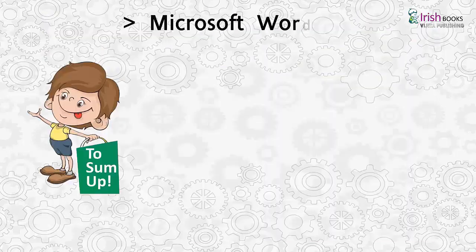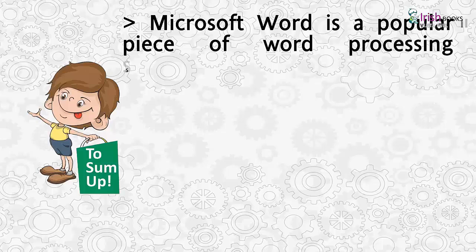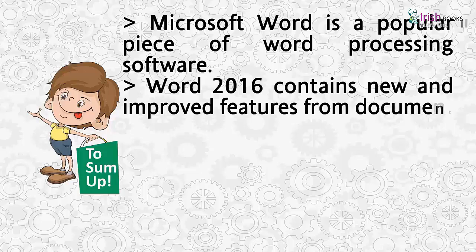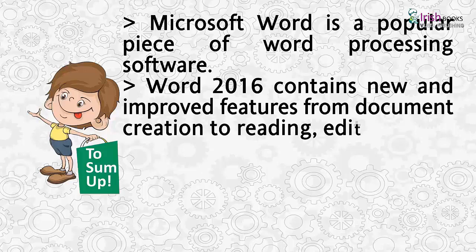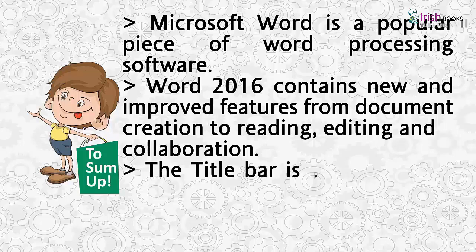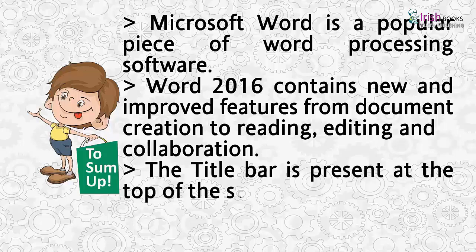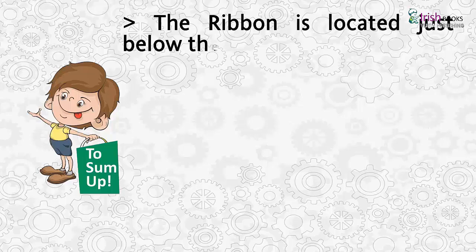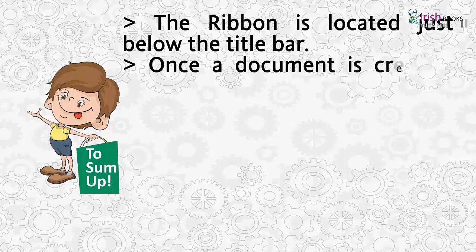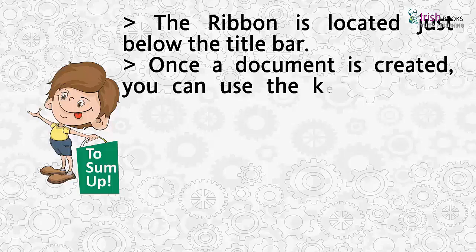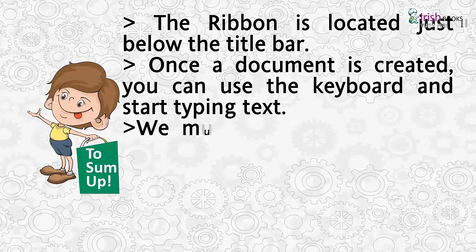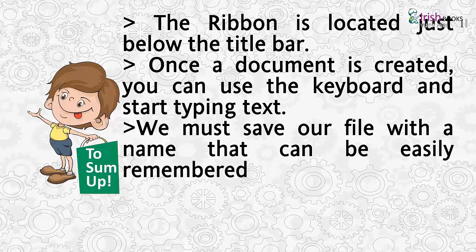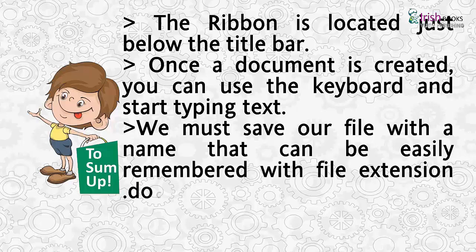Summary: Microsoft Word is a popular piece of word processing software. Word 2016 contains new and improved features from document creation to reading, editing and collaboration. The title bar is present at the top of the screen. The ribbon is located just below the title bar. Once a document is created, you can use the keyboard and start typing text. We must save our file with a name that can be easily remembered, with file extension .docx.